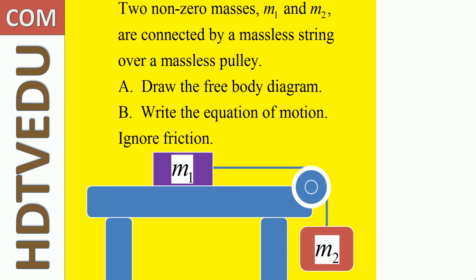Two non-zero masses, M1 and M2, are connected by a massless string over a massless pulley. Draw the free body diagram and write the equation of motion. Ignore friction.